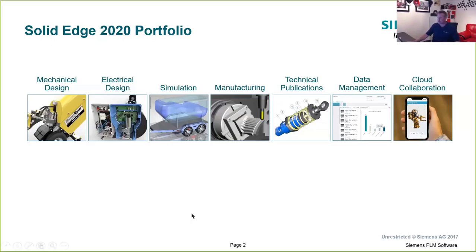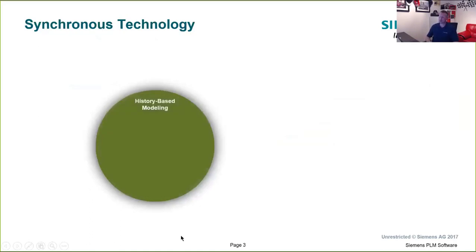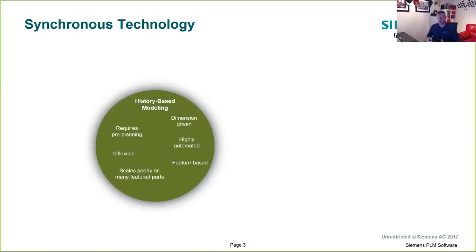Focusing on the Solid Edge mechanical design side, one thing I'm really going to be focusing on is something called synchronous technology — a unique technology inside Solid Edge that helps us be very flexible in the way we go about designing products and modifying them later on. Typically in the industry, there are two types of technology. The first is history-based modeling, which is very dimension-driven, can be highly automated, and is feature-based. But history-based models are very inflexible because you have to upfront plan how you think the design might be modified later on, and it scales poorly on parts with lots of features.